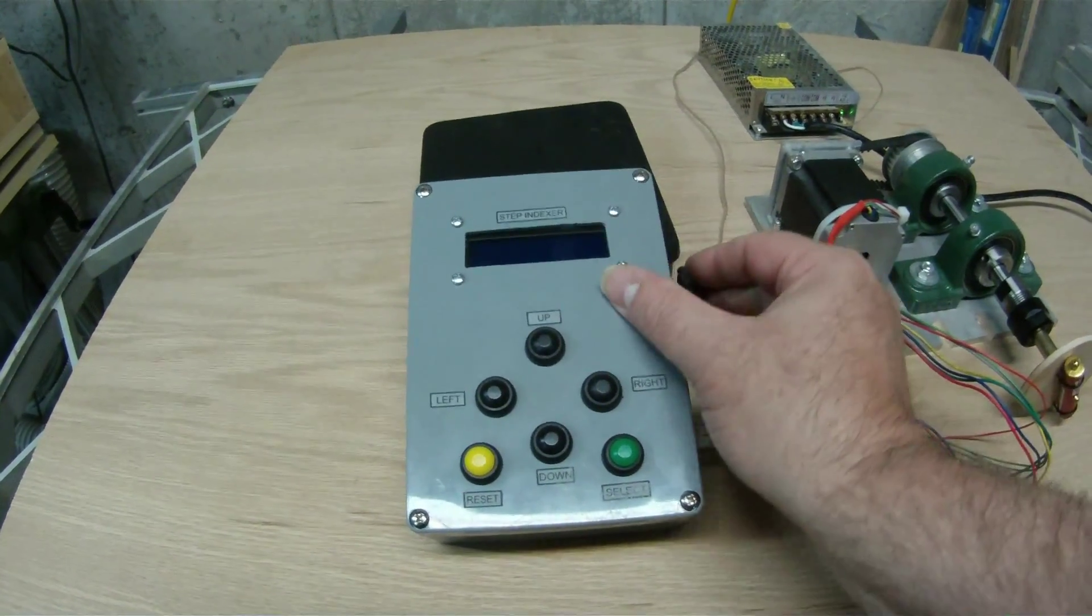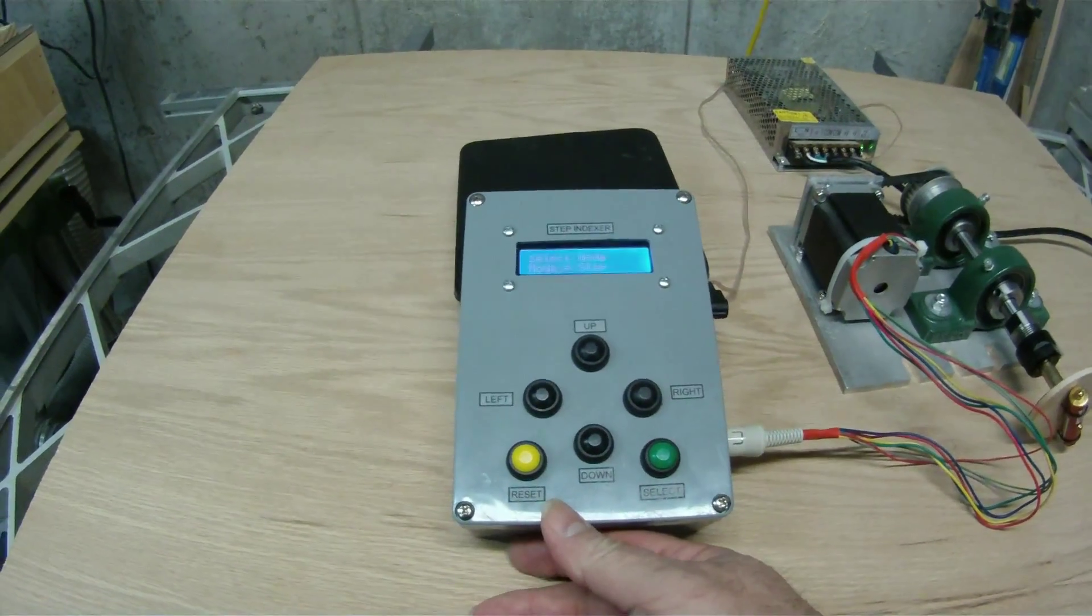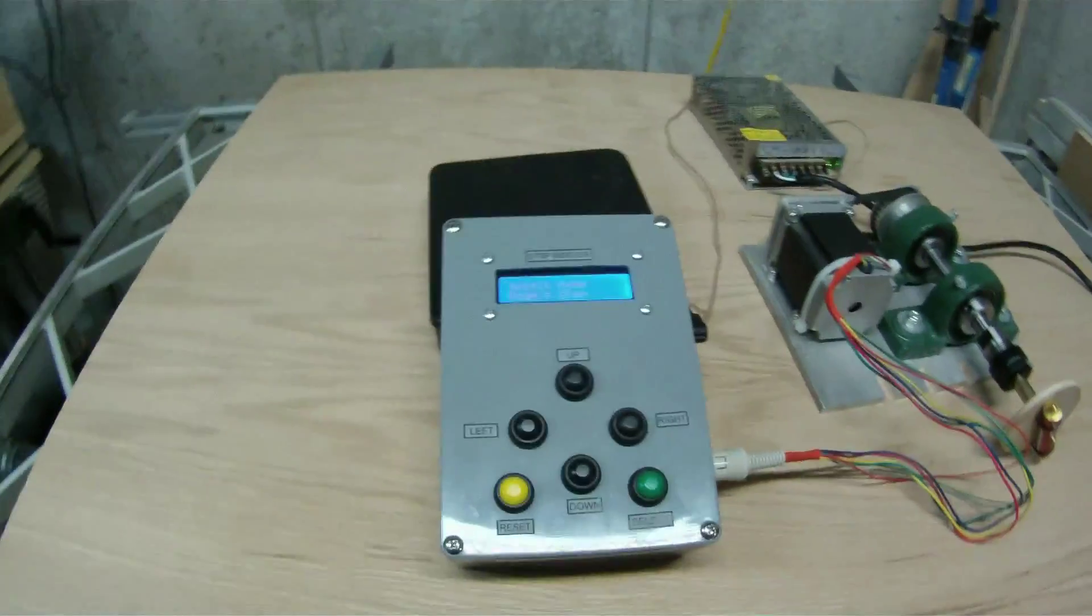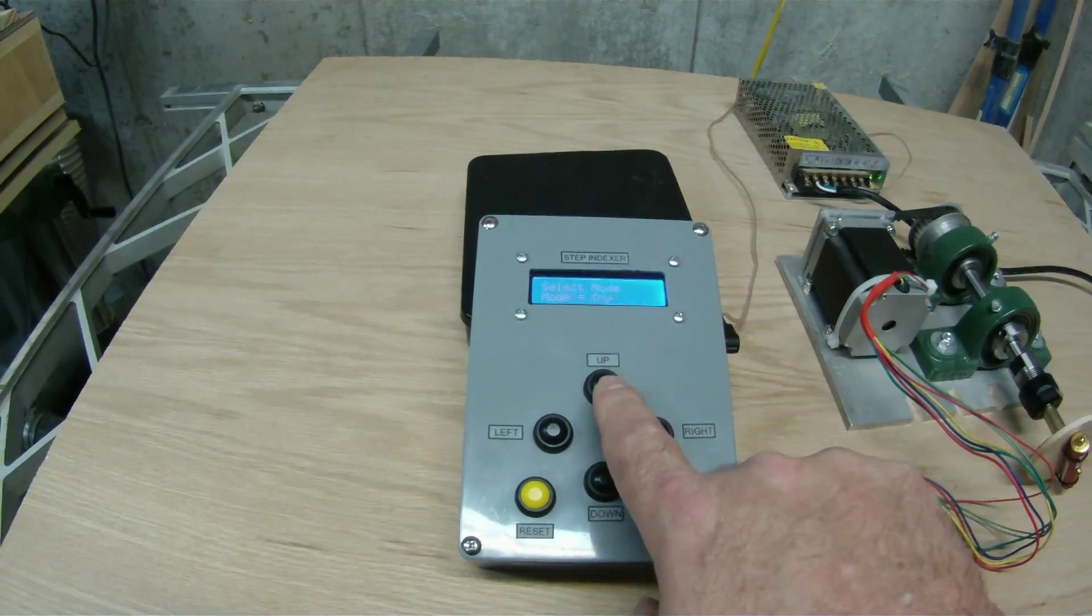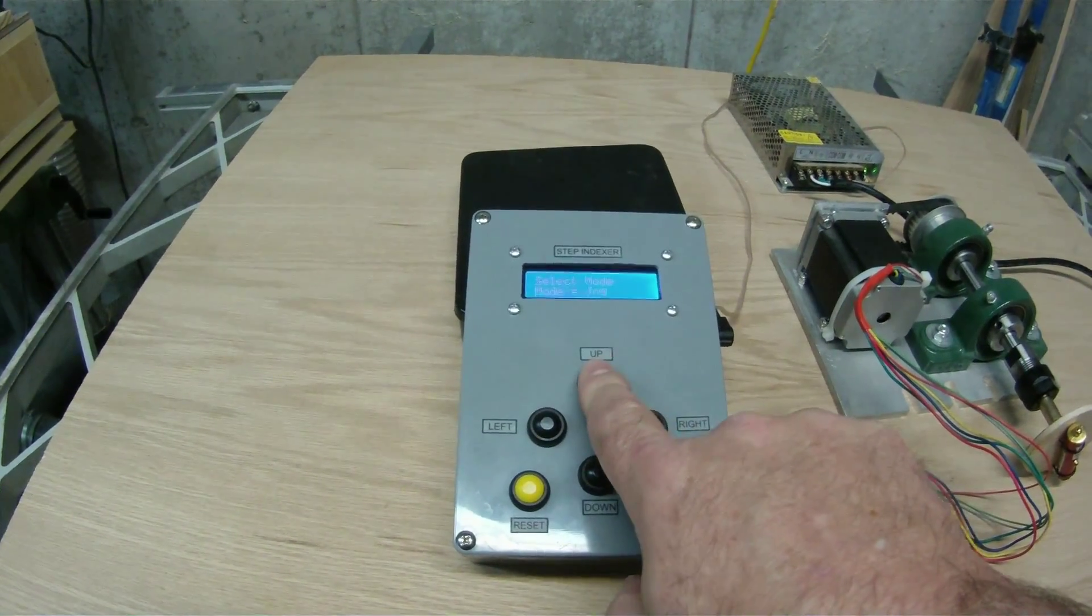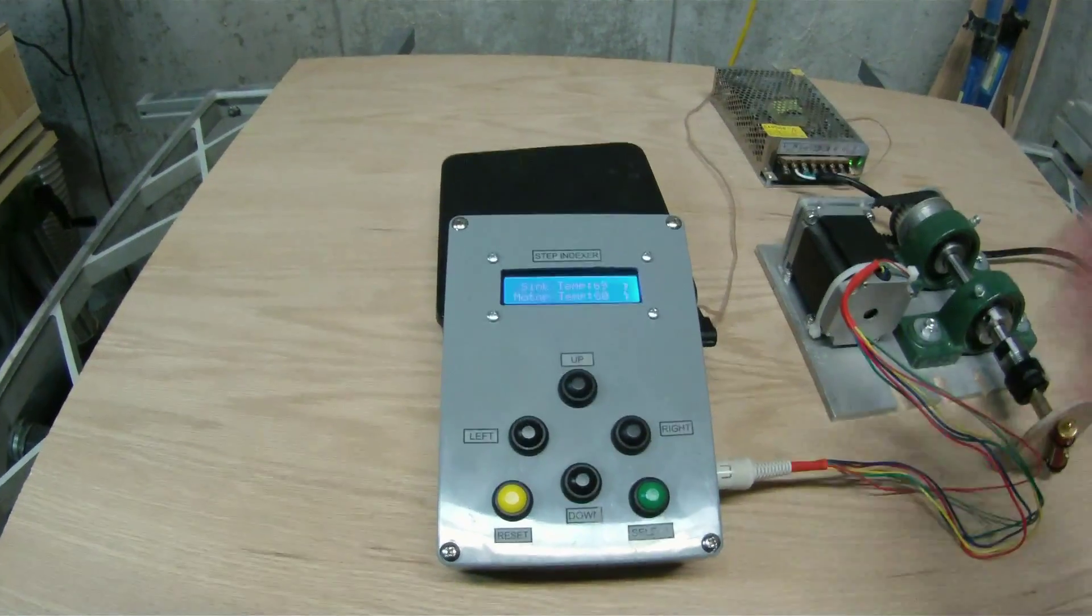But since we've got it all hooked up, let's go ahead and plug in the power. Here's the flash screen, it says 2.2, that's the new version, and the same modes are present as were there before: the run mode, the angle mode, the jog mode, the ratio mode, and the temperature mode.